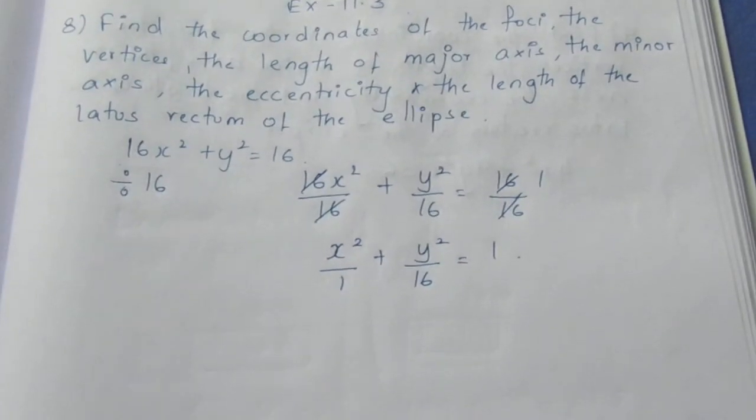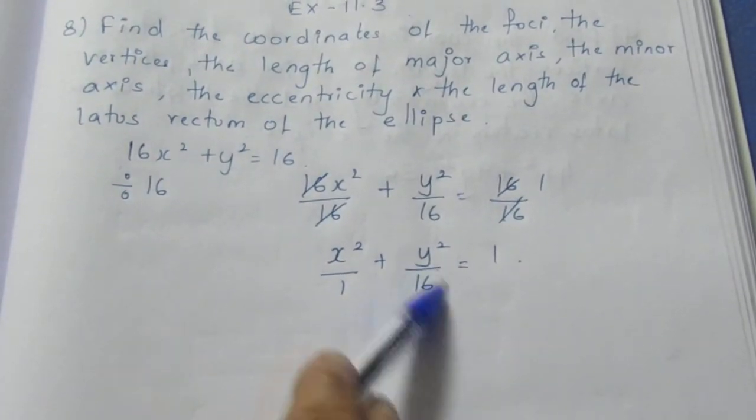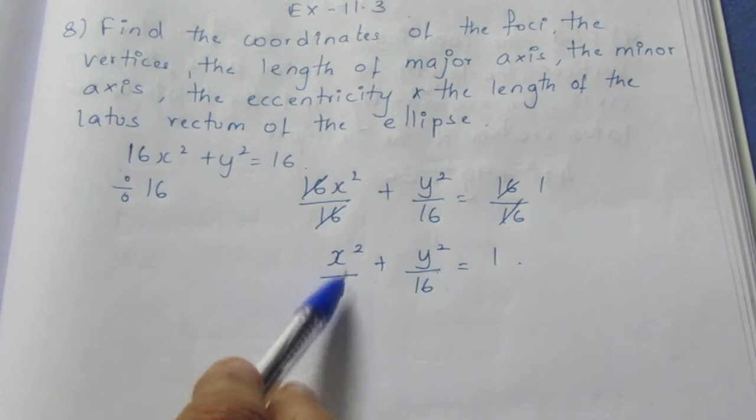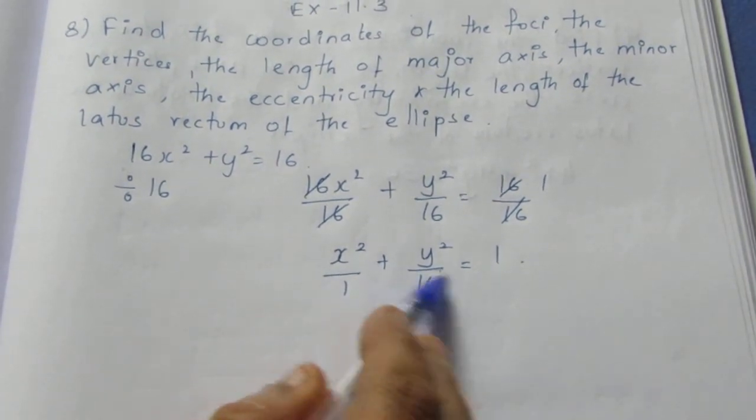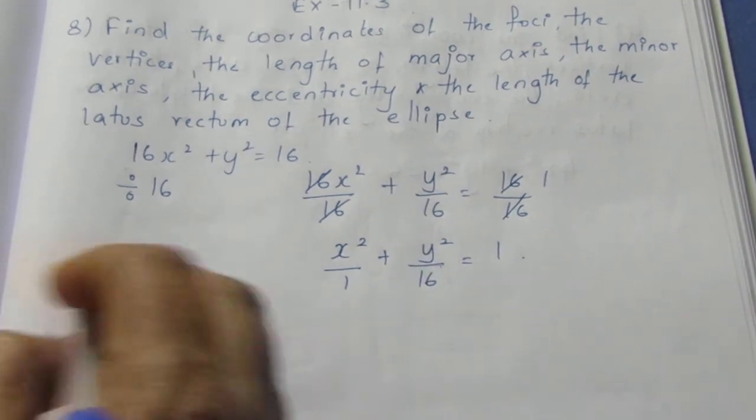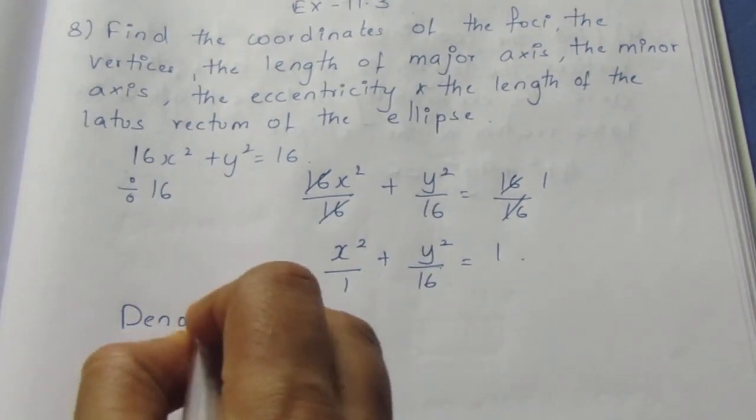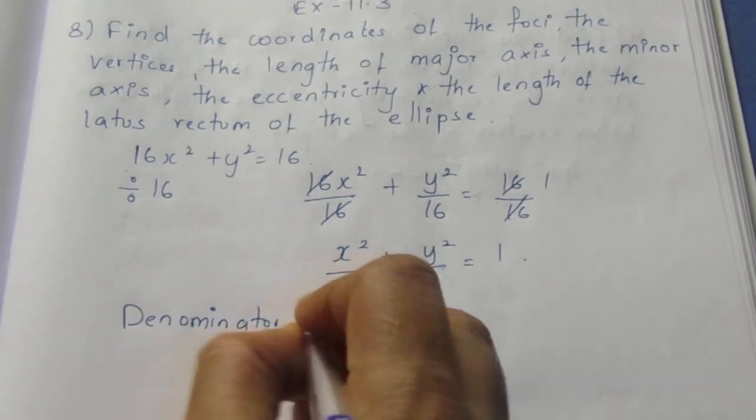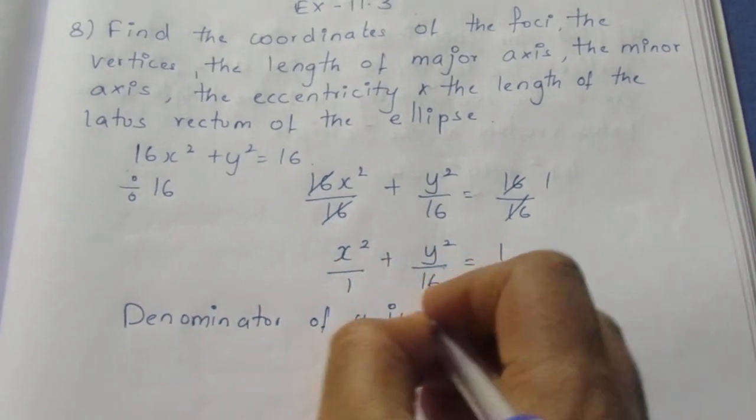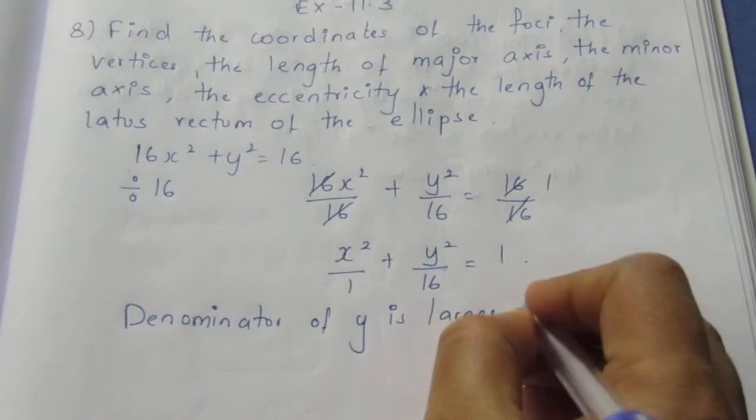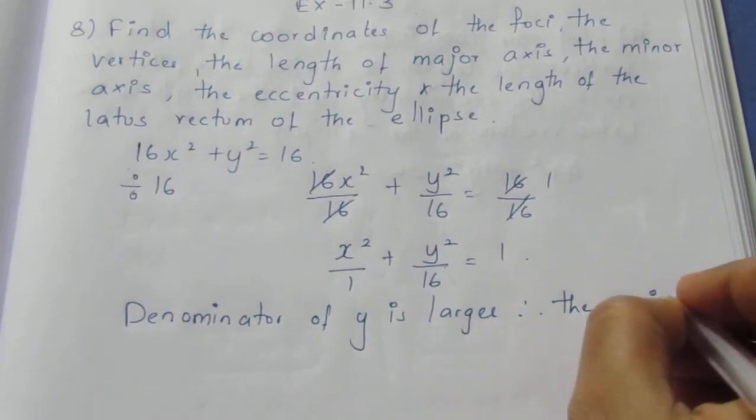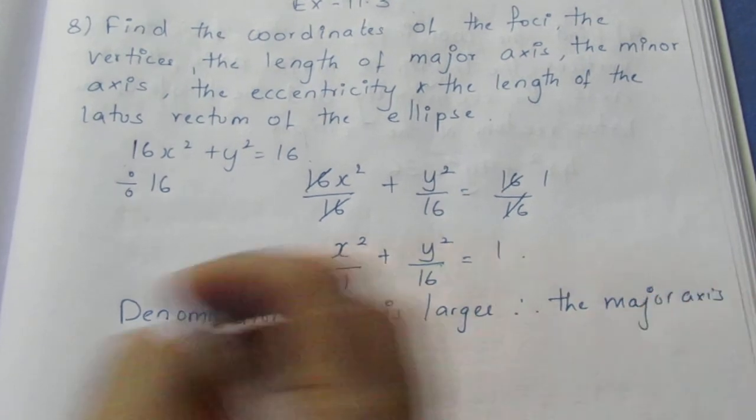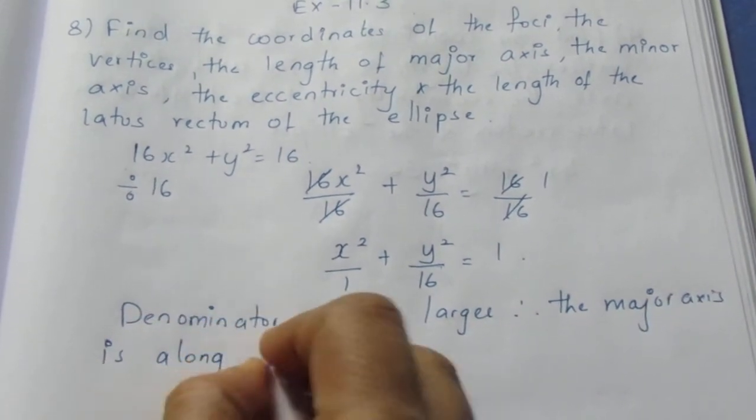Now we see the denominator of y is larger than x. Therefore the major axis is along the y axis. We need to see the denominator. Here the denominator of y is larger, therefore the major axis is along y axis.